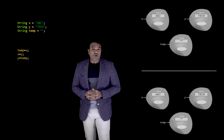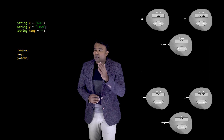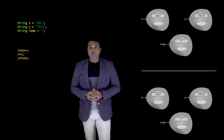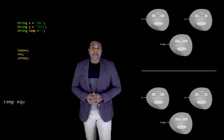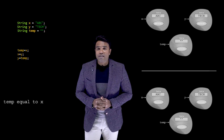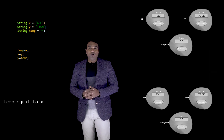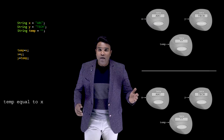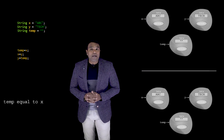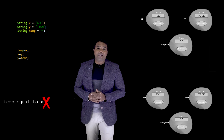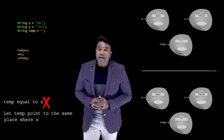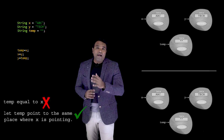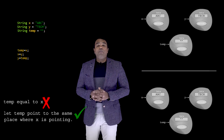Now let me demonstrate the impact of each line. The first line is temp = x. As an unseasoned programmer you might read it as 'temp equals x', but as a seasoned programmer you must understand that temp, x, and y are all references. So you shouldn't read that statement as 'temp equals x' — rather, you should read it as: let temp point to the same place where x is pointing.